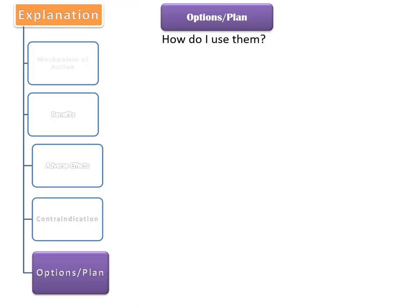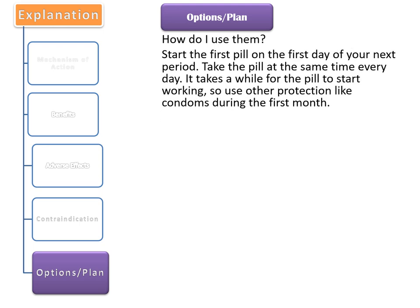By the end of the explanation, we need to give some options or make a plan. If the patient asks how to use the pill, we can explain: Start the first pill on the first day of your next period. Take the pill at the same time every day. It takes a while for the pill to start working, so use other protection like a condom during the first month.